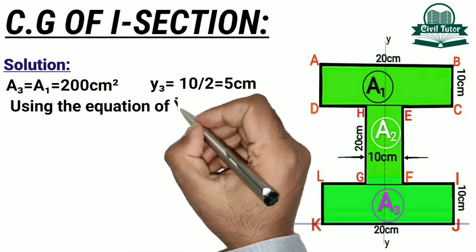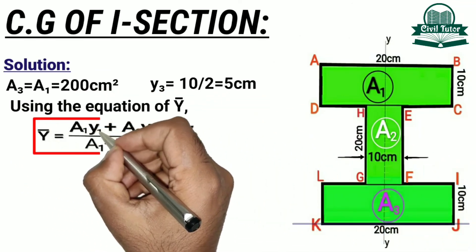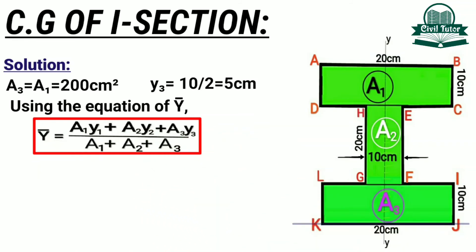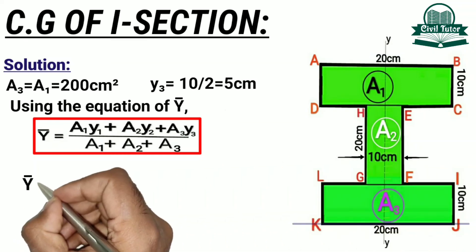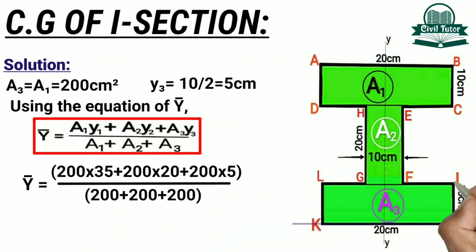Now, using the equation of Y-bar which is Y-bar equal to A1Y1 plus A2Y2 plus A3Y3 divided by A1 plus A2 plus A3, and substituting all the calculated values in this equation, we will get the value of Y-bar equal to 20 cm.